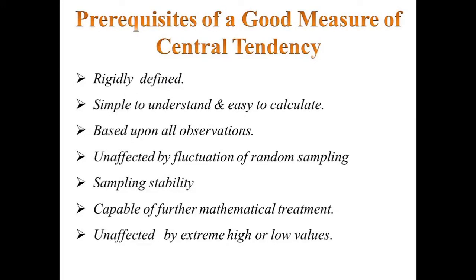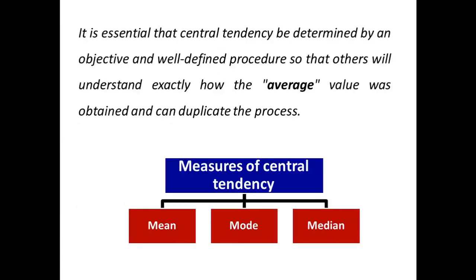These are the pre-requisites of a good Measures of Central Tendency. It should be rigidly defined and simple to understand as well as easy to calculate. It should be based upon all observations and should not be affected by fluctuation of random sampling — in other words, the dataset should be homogenous before taking any random sample. It should have sampling stability and be least affected by any kind of sampling method. It should be capable of further mathematical treatment and should not be unduly affected by extreme high or low values. It is essential that central tendency be determined by an objective and well-defined procedure so that others will understand exactly how the average value was obtained and can duplicate the process.